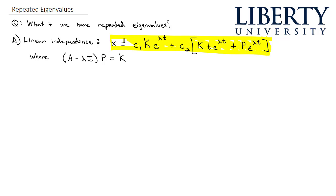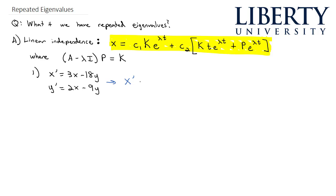Let's look at some examples. We'll solve the differential system x prime equals 3x minus 18y and y prime equals 2x minus 9y. Initially this feels a lot like what we saw in the previous video. We start by converting to matrix form: capital X prime equals the coefficient matrix [3, -18; 2, -9] times our solution matrix x.